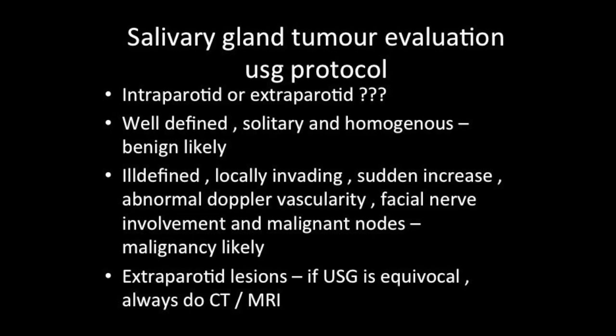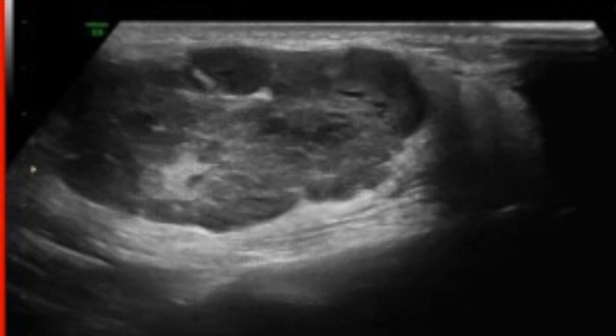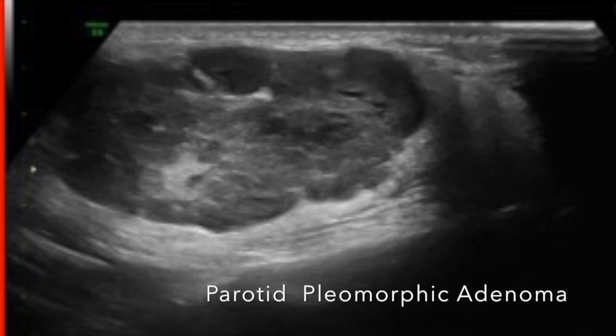The most common day-to-day scenario is a female over 40 years of age who walks in with a parotid mass she has had for many years and has not done any imaging, now presenting for an ultrasound of the parotid gland. Typically you see a hypoechoic solid mass with lobulated margins and very poor vascularity — this is nothing but a pleomorphic adenoma.